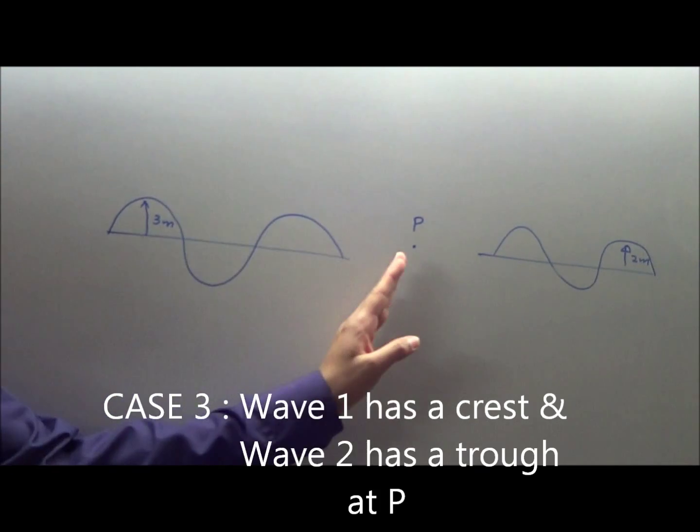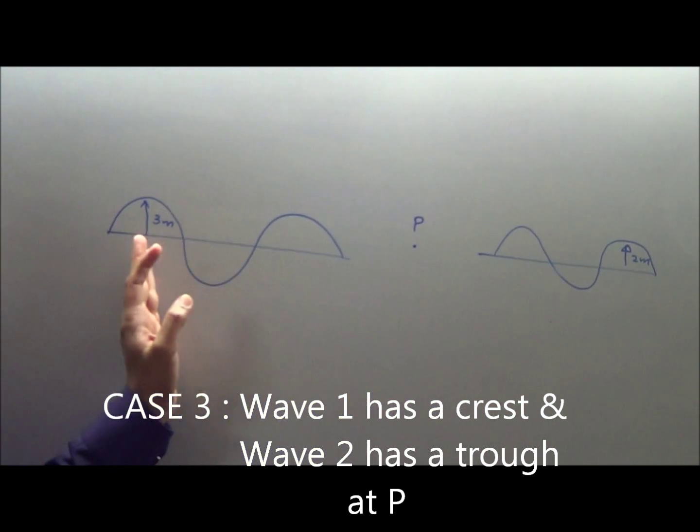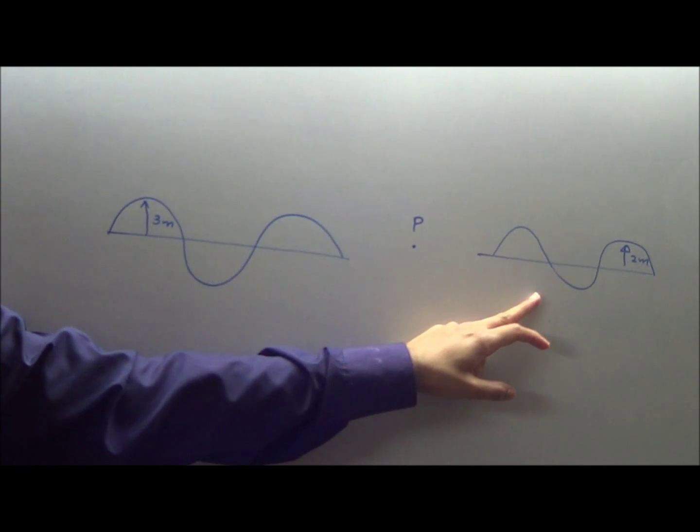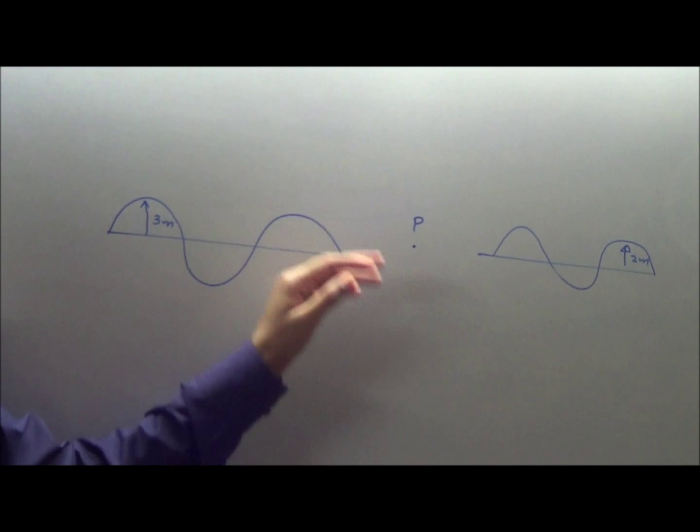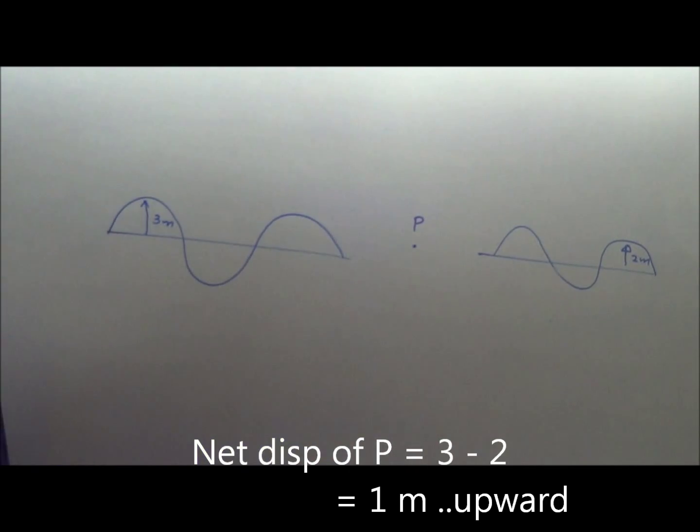Case 3: wave 1 might have a crest at P, wave 2 might have a trough at P. Wave 1 pushes P up by 3 meters, wave 2 pushes P down by 2 meters. Total 3 minus 2, 1 meter up.